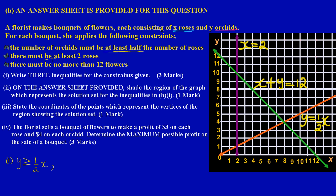The second constraint states there must be at least two roses. Since x represents the roses, the inequality is x ≥ 2. This means there can be two roses or more, but it cannot go below two. So one rose would not satisfy this constraint — it must be two, three, four, five roses, and so on.